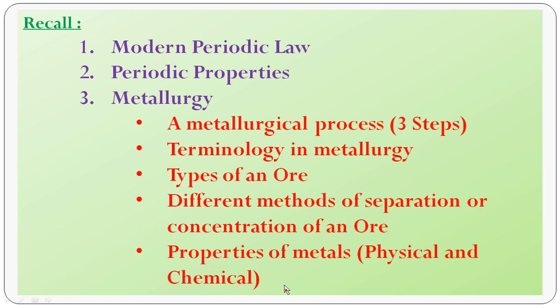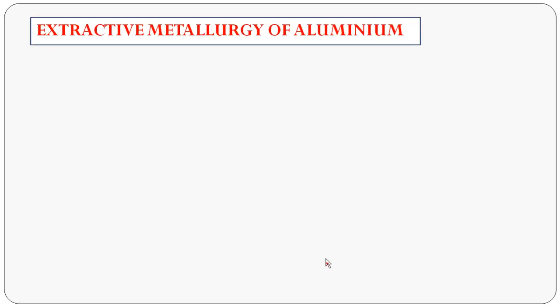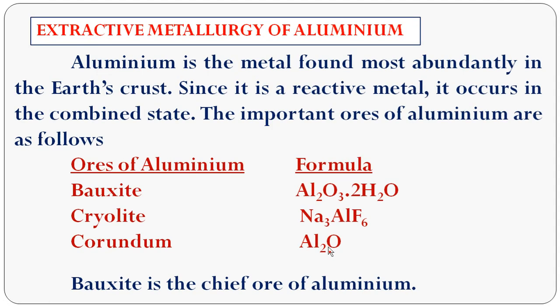Now we come to the next topic: the extraction of metals. In this lesson, we will study three metals — aluminum, iron, and copper. In this class, we will extract aluminum and study its physical, chemical properties, and uses. The symbol of aluminum is Al, it has atomic number 13, and valency 3.